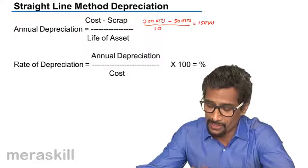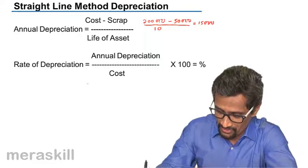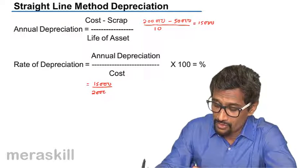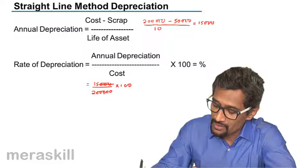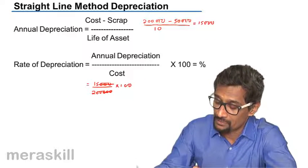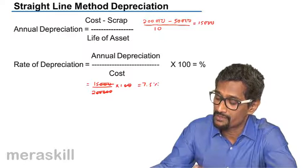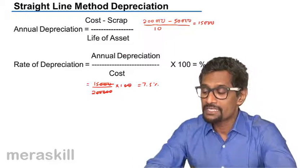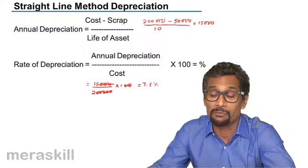So rate of depreciation will be annual depreciation, that is 15,000 upon the cost 2 lakh into 100. So that turns out to be 15,000 and accordingly we get 1500, so it turns out to be 15 by 2, which is 7.5% is the rate of depreciation as per the straight line method of depreciation. Assumptions are made that it's an average depreciation per year.